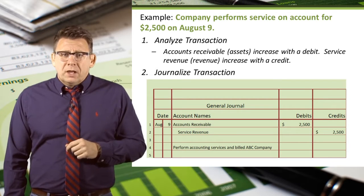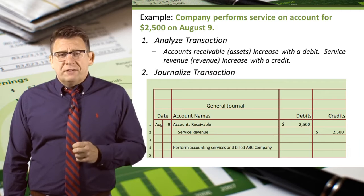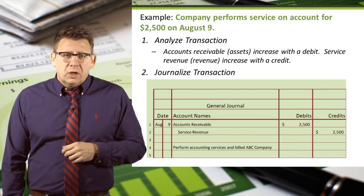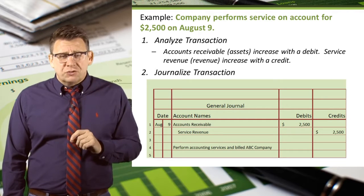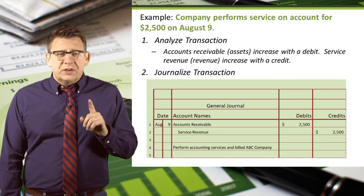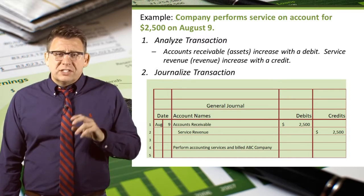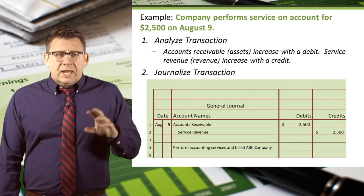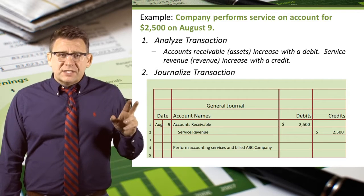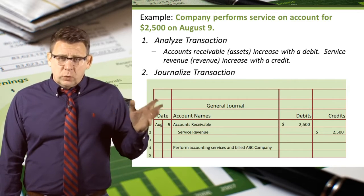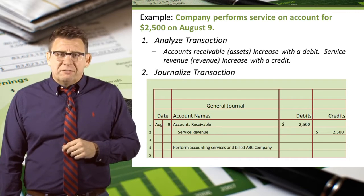Let's look at another example. A company performs service on account for $2,500 on August 9th. We analyzed this transaction and determined that accounts receivable, an asset account, is increased with a debit, and service revenue, a revenue account, is increased with a credit. So we'll enter the date, August 9th. We will then list the debit account, so we enter accounts receivable, and in the debit column we'll enter $2,500.